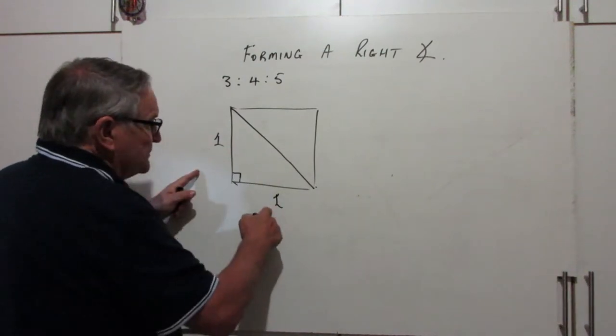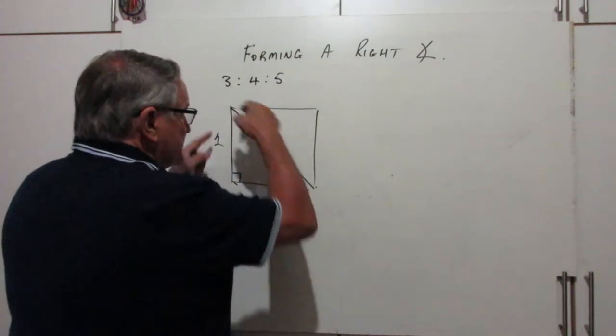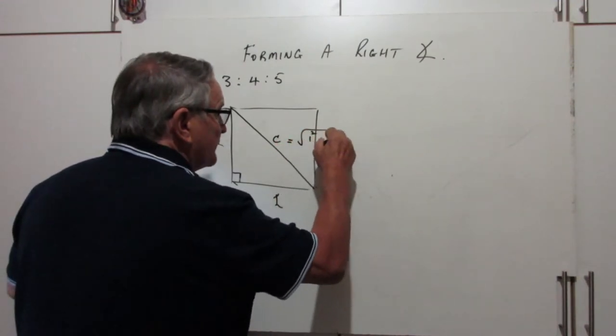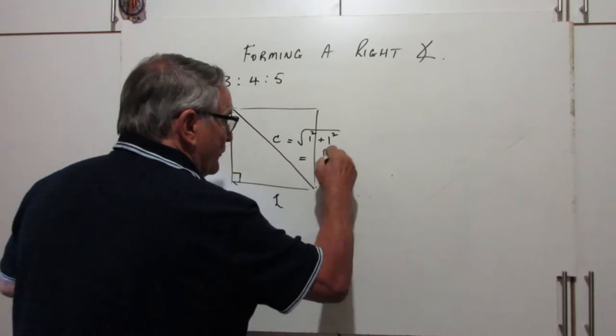And by Pythagoras, this distance, this diagonal C, will be the square root of 1 squared plus 1 squared, which is the square root of 2.